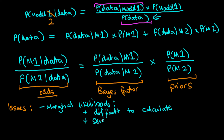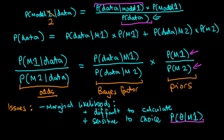Another issue with marginal likelihoods is that they are very sensitive to our choice of priors for each of the models — specifically the prior probability of theta given model one. Importantly, I'm not talking about the prior probabilities on the models themselves; I'm talking about the priors we ascribe to the parameters in Bayes' rule for inference. The problem is that the marginal likelihood can change significantly as we change our priors on the parameters, even if those changes don't actually affect the posterior particularly much.